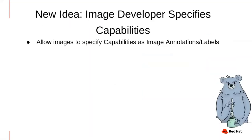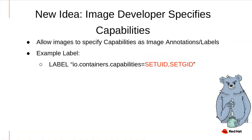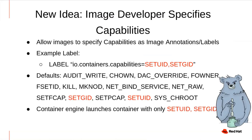So as you saw, we can further reduce the default capabilities to about 10 for all container workloads. But as an end user, it can be confusing knowing what exact capabilities you need. The image developers are the people who best know what capabilities are needed to run the containers they're building. If I'm an image developer and I know my container only needs SetUID and SetGID capabilities, I can set this as a label or annotation in the image when building it. When Podman launches this container, it will start it with only those capabilities, not the default 14.